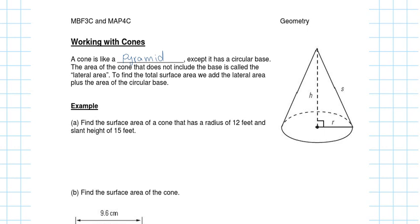To find the total surface area of a cone, we add the lateral area plus the area of the circular base. The area of the circular base is πr², and the lateral area is πrs, where s is the slanted height. So the full formula on your formula sheet is πr² plus πrs.